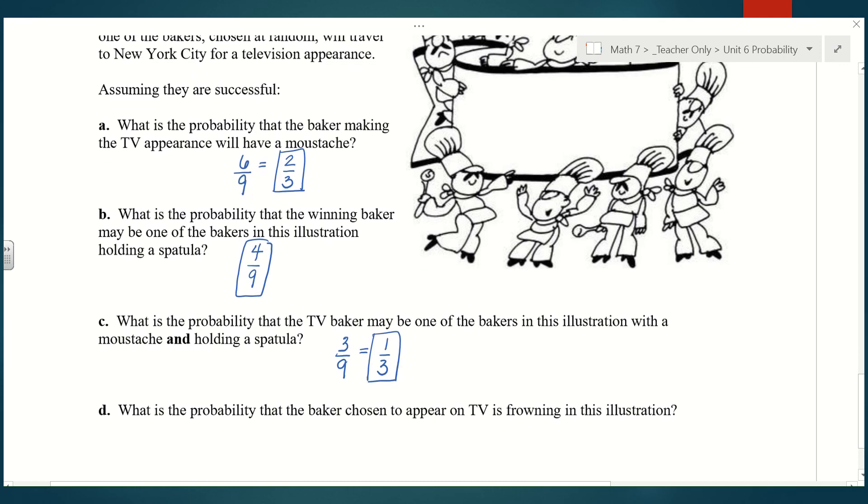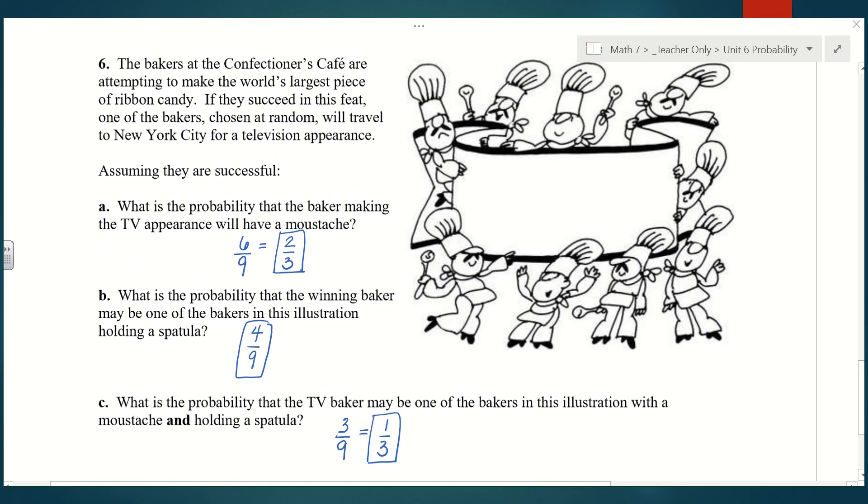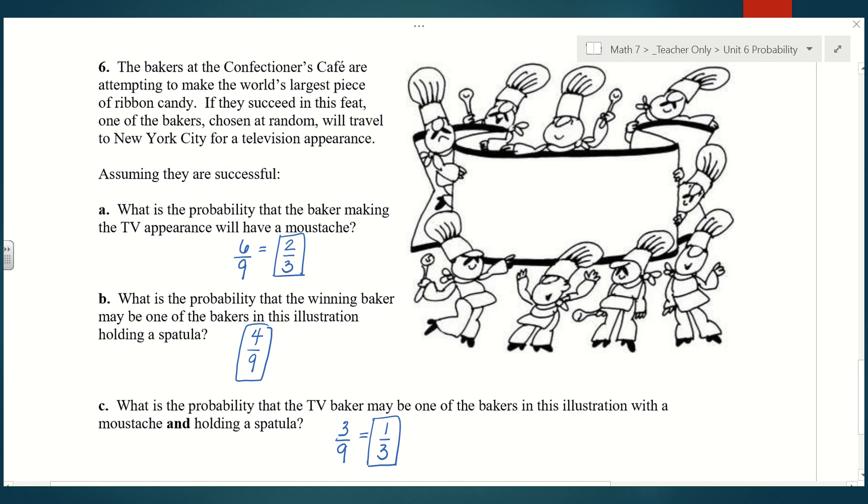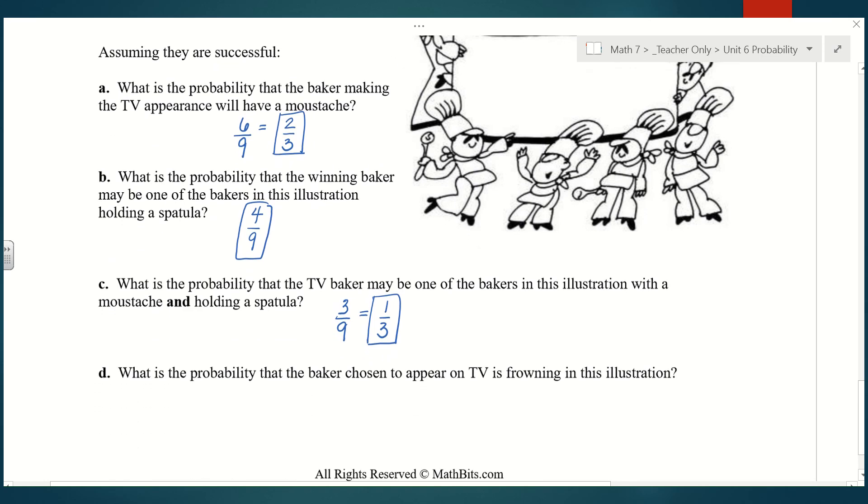And the last question, what is the probability that the baker chosen to appear on TV is frowning in this illustration? It looks like there is only one sad baker in the top left corner, so 1 out of 9. Okay guys, so that's the end of the probability unit. The next videos I would like you to start watching are from the statistics unit. You can go back to my page and start working through those.